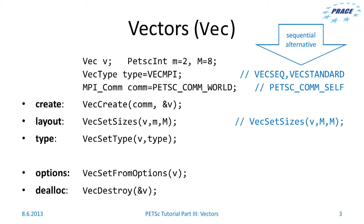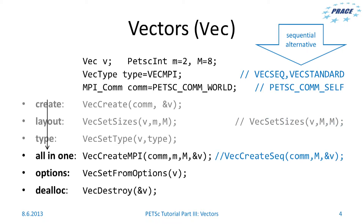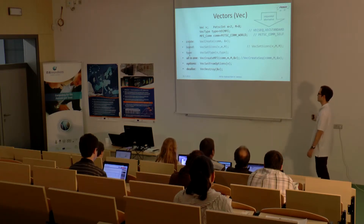There is also a sequential alternative. If you want to have a sequential vector, in this case you could set the type to VECSEQ, the communicator to PETSC_COMM_SELF, and set the local and global sizes to the same number. You can also call VecCreate, and set the layout and type of the vector all in one using VecCreateMPI and similar functions.